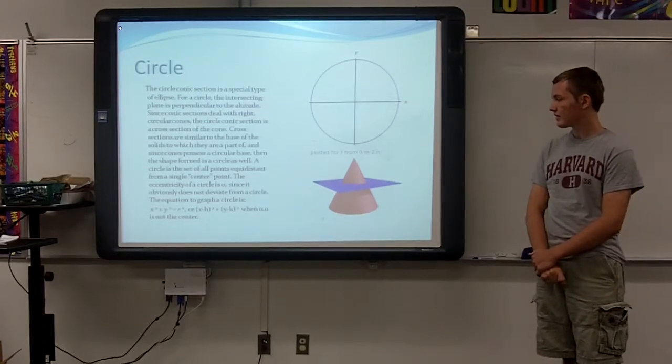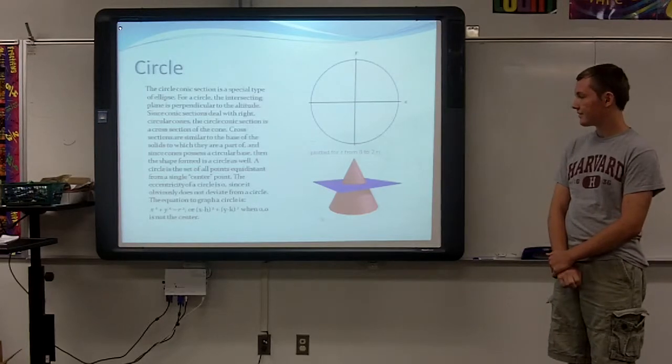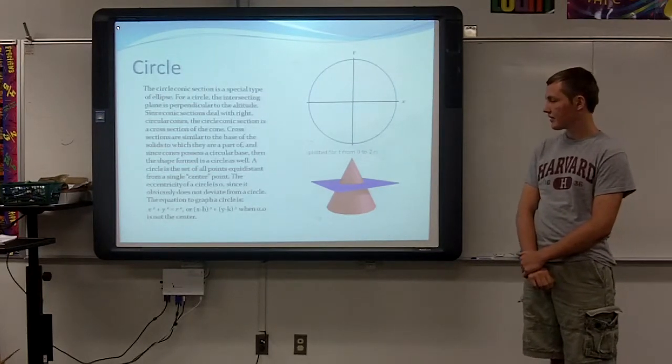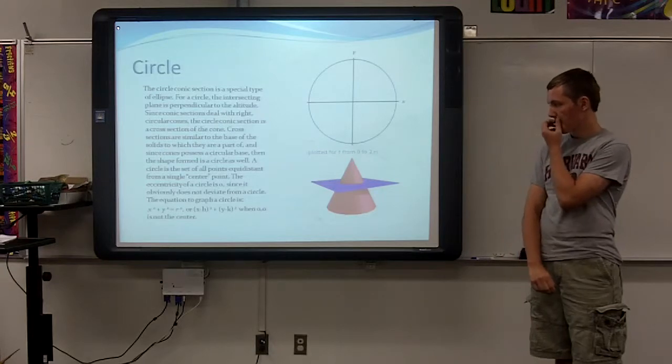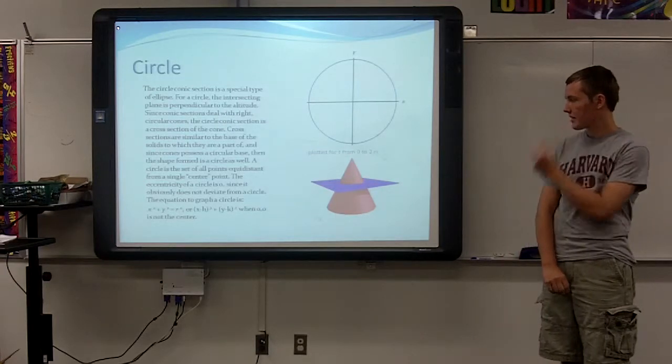The equation to graph a circle is x squared plus y squared equals r squared, or x minus h squared plus y minus k squared when zero, zero is not the center.